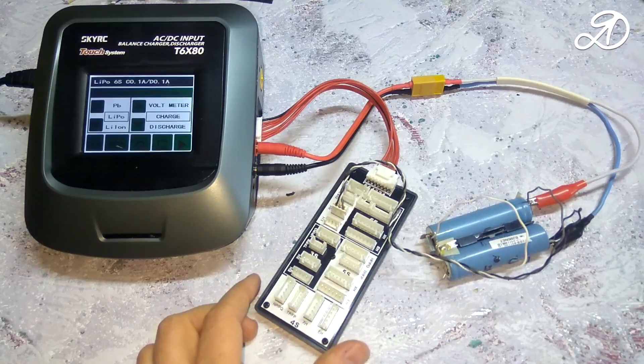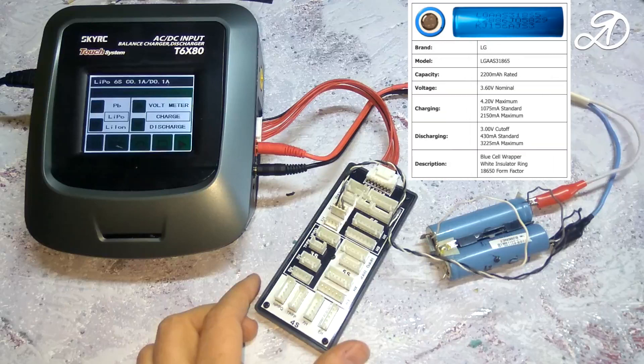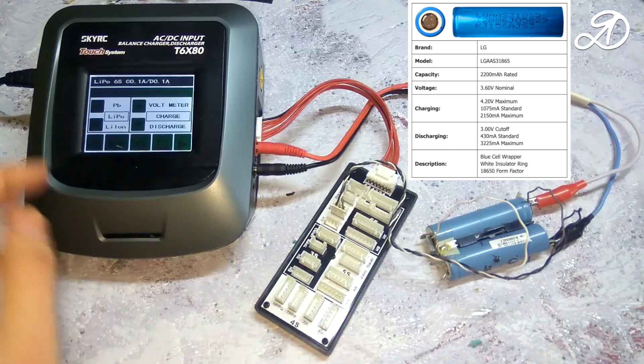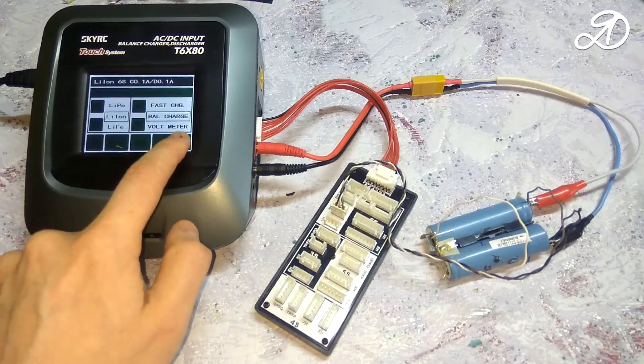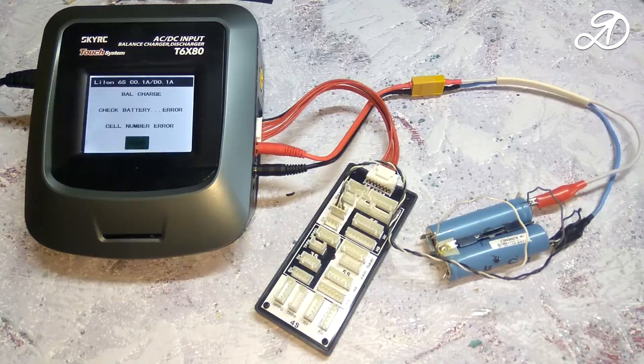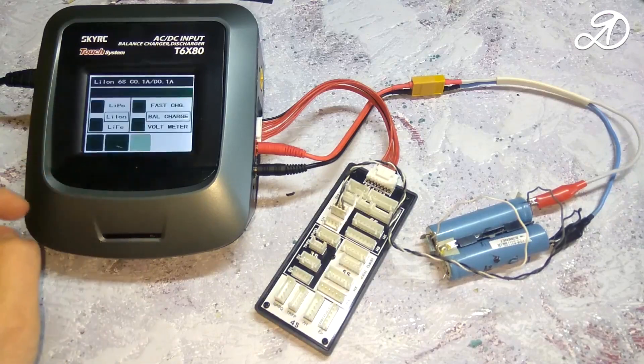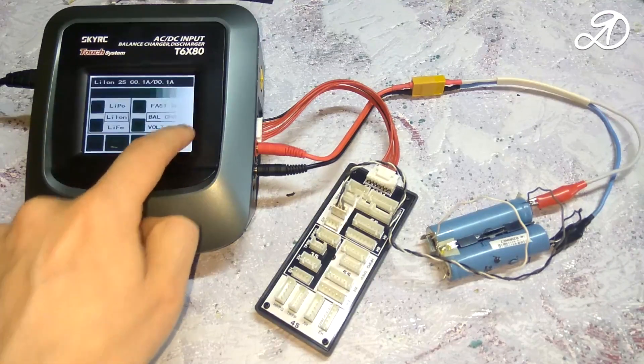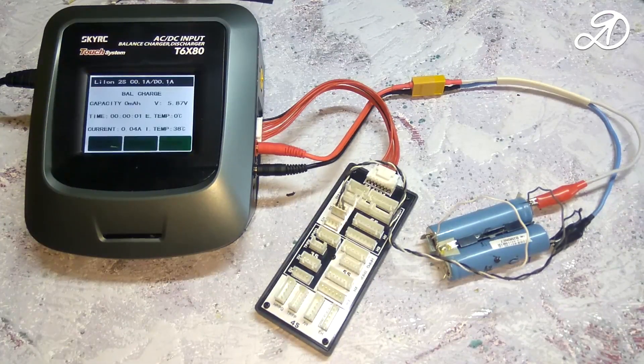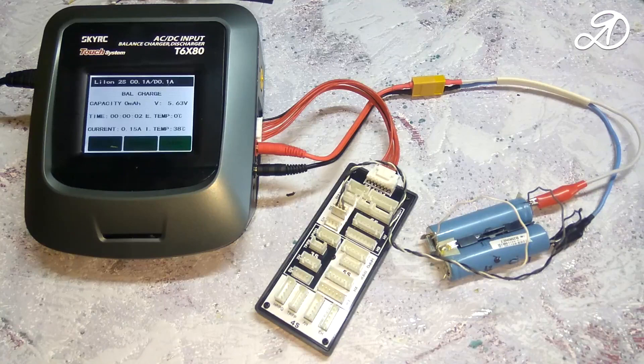Each type of battery has its own charging and discharging parameters. For example, for Li-Ion batteries, you need to search for a technical description to set the correct values. If the voltage of one battery is less than 2.5 volts, then you need to charge at small current.